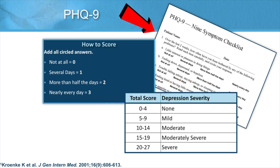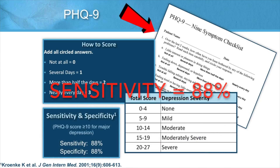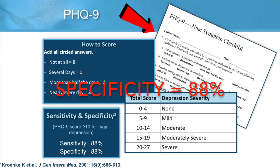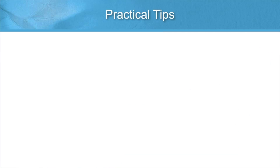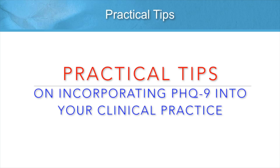In my experience, I've found that patients really value this numerical description of their depression. It really does seem to help them appreciate both positive and negative changes. The PHQ-9 has excellent psychometric properties, as evidenced by a sensitivity of 88% and a specificity of 88%. After years of using the PHQ-9, I want to share a few practical tips about incorporating this tool into your clinical practice.